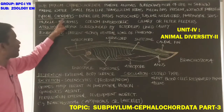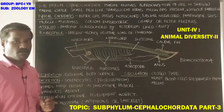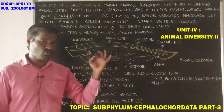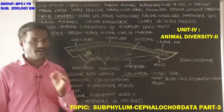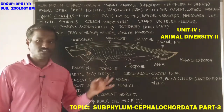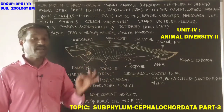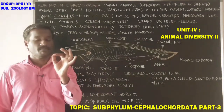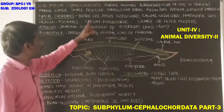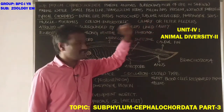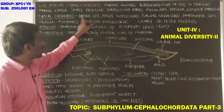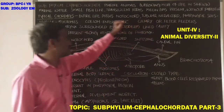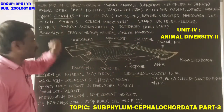These animals are also called typical chordates because the principal chordate characters — notochord, tubular nerve cord, pharyngeal slits, and tail — are shown throughout the entire lifetime, not only in larval or embryonic stages.